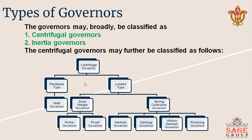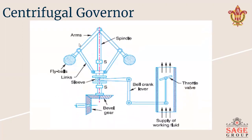Before we discuss about the Watt governor, we have to discuss the figure about the centrifugal governor. This is the schematic diagram of a centrifugal governor. Centrifugal governors are based on balancing of centrifugal force on the rotating balls by an equal and opposite radial force — that force is known as the controlling force. It consists of two balls of equal mass, the first one and the second one.